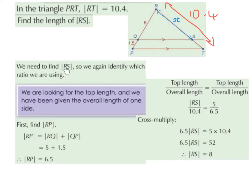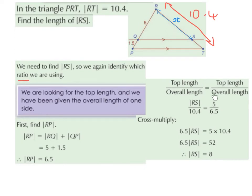We need to identify which ratio we're going to use. We're looking for the top length, and we've been given the overall length of one side. We also know this top length and this bottom length, and consequently this overall length as well. So we're going to use this formula: top length divided by overall length on the left equals top length divided by overall length on the right.